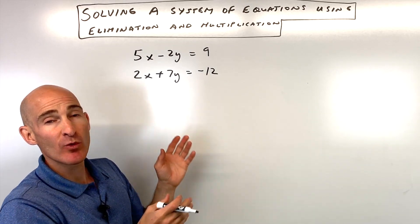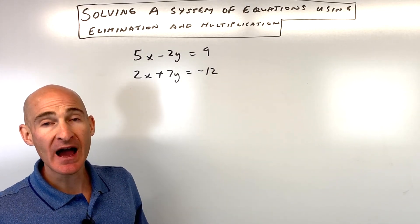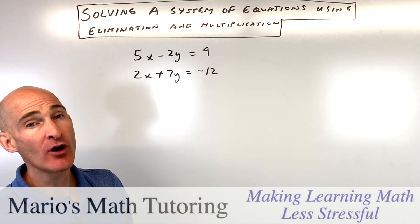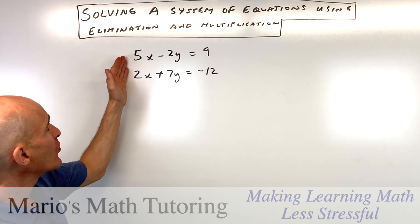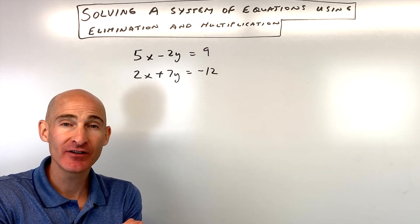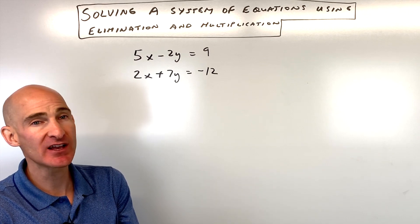We're given a system of equations and we want to find out where these two lines are going to intersect using the elimination method also involving multiplication. What we want to do when we do the elimination method is we want to be able to add these equations together so that either the x variables cancel out or the y variables cancel out.